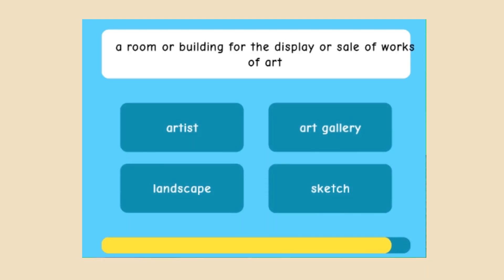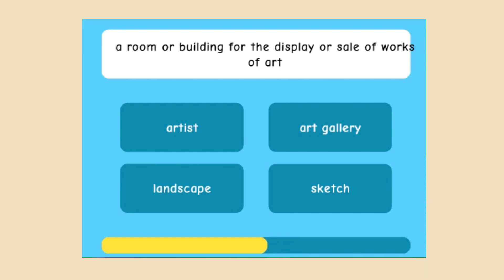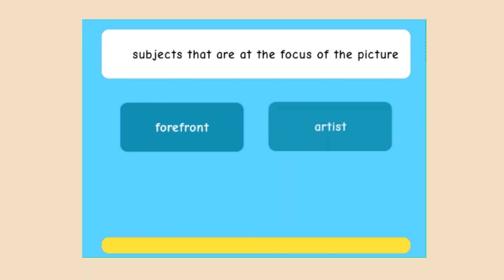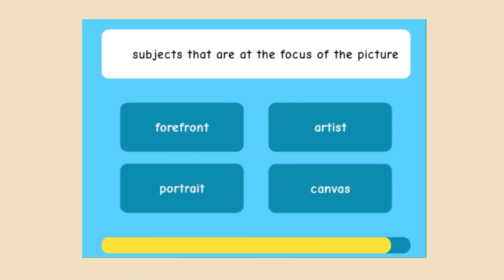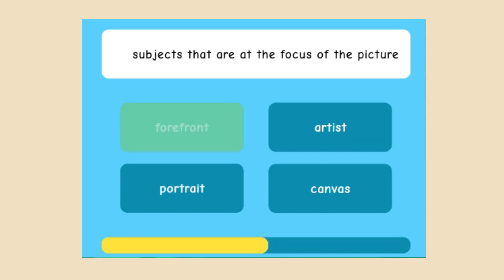A room or building for the display or sale of works of art — is it called artist, art gallery, landscape, or sketch? Art gallery. Subjects that are at the focus of the picture — forefront, artist, portrait, or canvas? The correct answer is forefront.